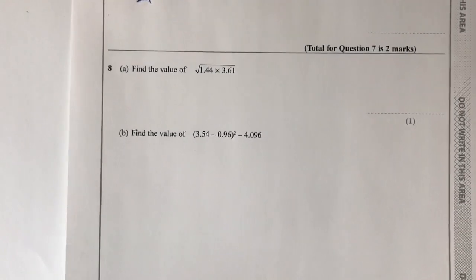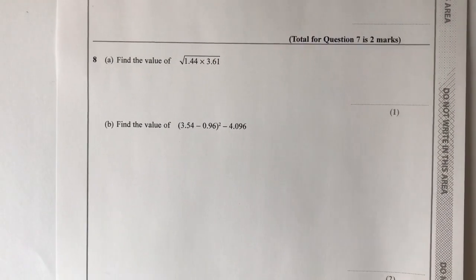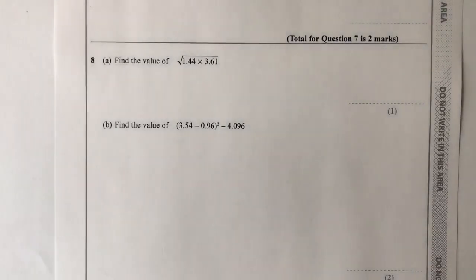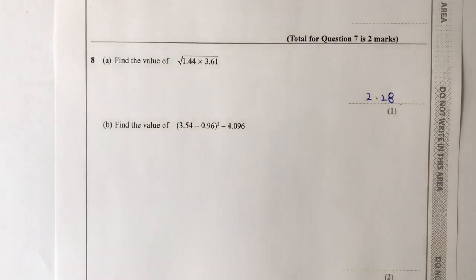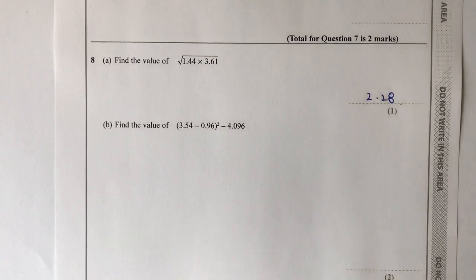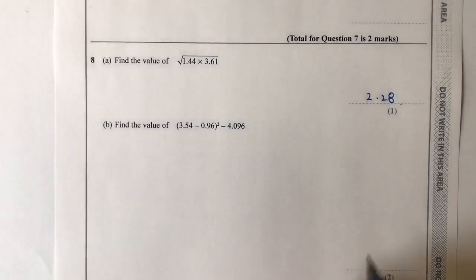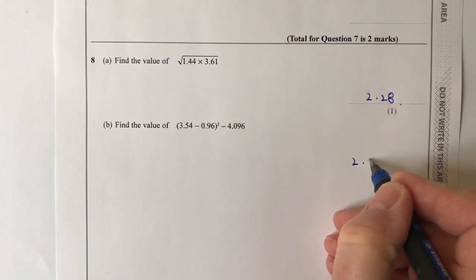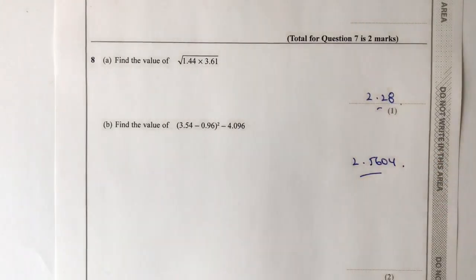Let's move on to question number eight: find the value of. It is a calculator paper, so if you pop that into your calculator, you should come up with 2.28. And then the second one — find the value of. Again, pop that into your calculator. Be very careful about how you enter things; make sure you put the brackets and the squared in the correct place. You should come up with 2.5604.